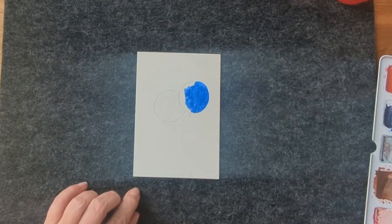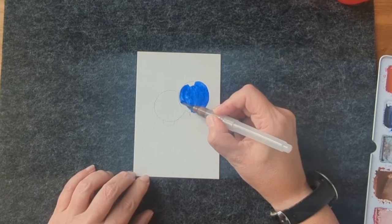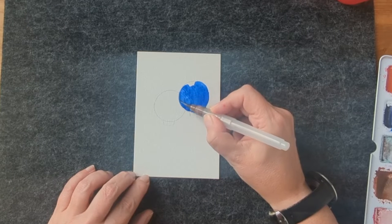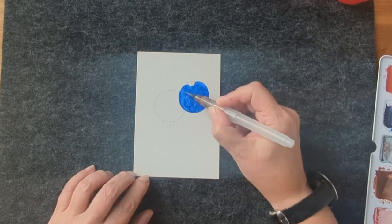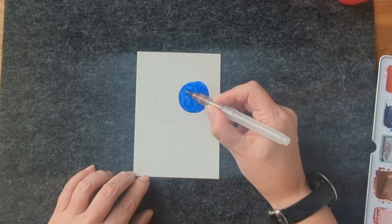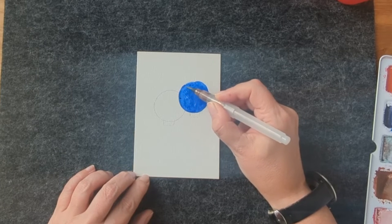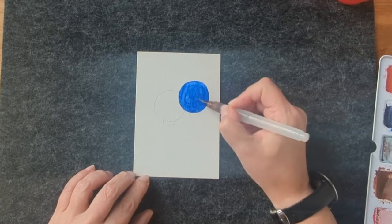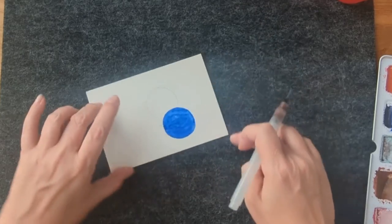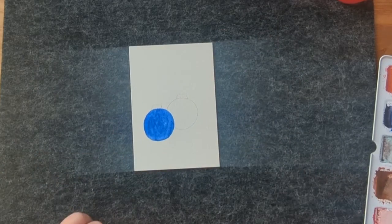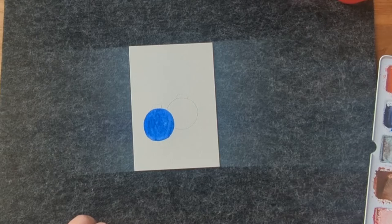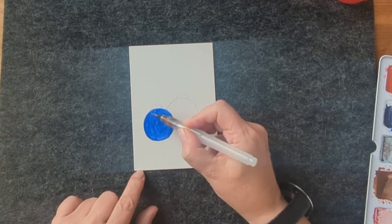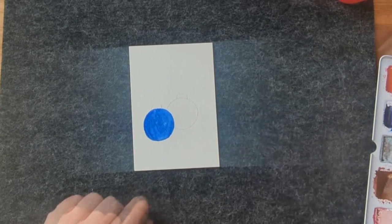I have to turn the paper around because I can paint more smoothly this way. I use some more color to darken one side of the circle just so that it is not so flat.